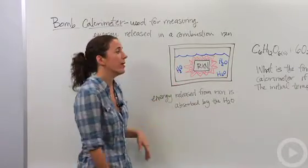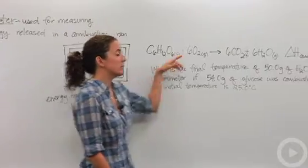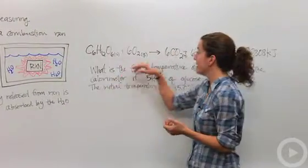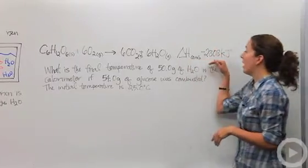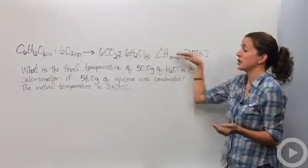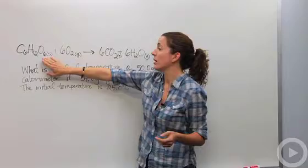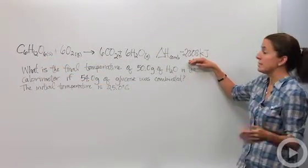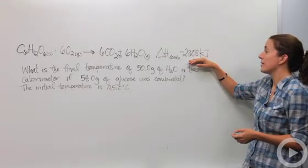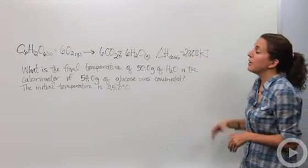All right, so let's put this into practice. So we have a glucose molecule reacting with oxygen in a simple combustion reaction. We're producing carbon dioxide and water. And we have found that when this reaction happens, for every one mole of glucose that combusts, it produces negative, or produces 2,808 kilojoules of energy.